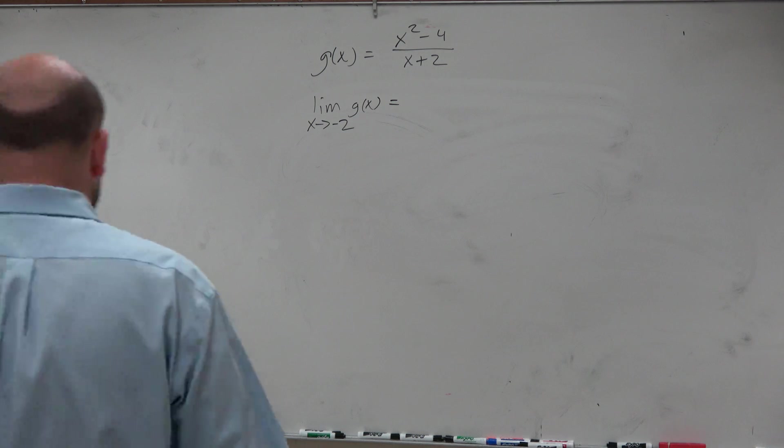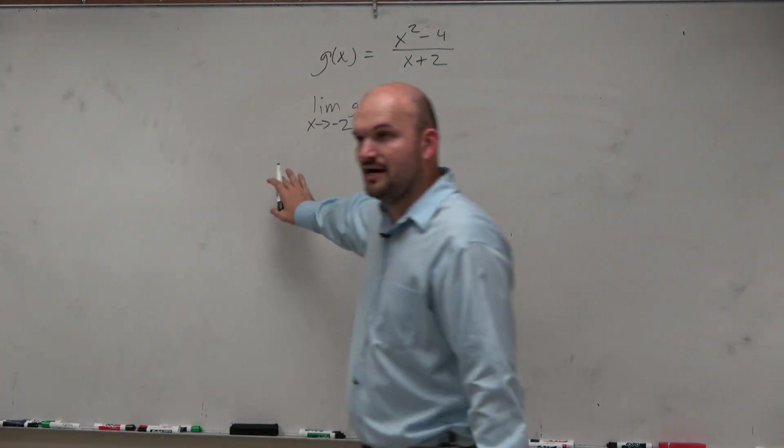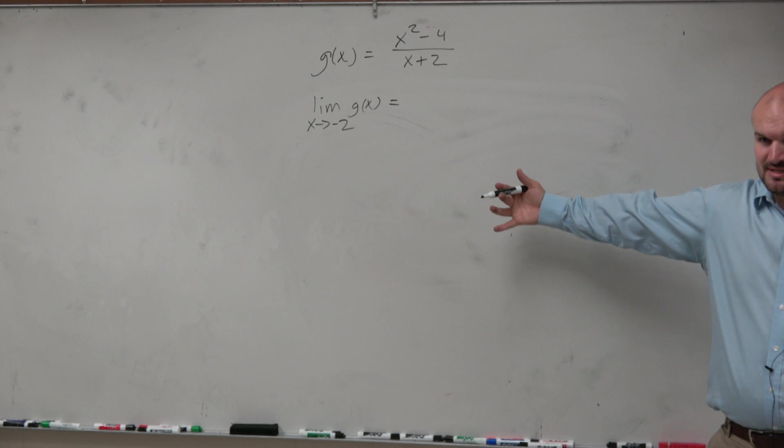This is because if you're trying to do direct substitution, you're going to have 0 in the denominator. And you can't divide by 0, correct?